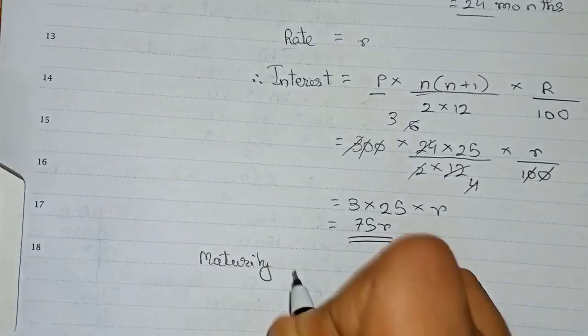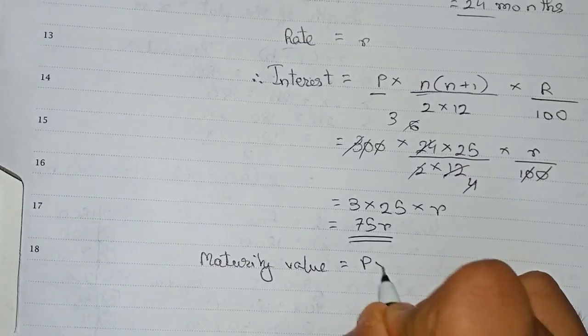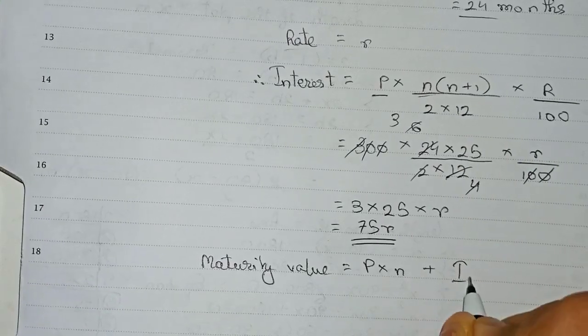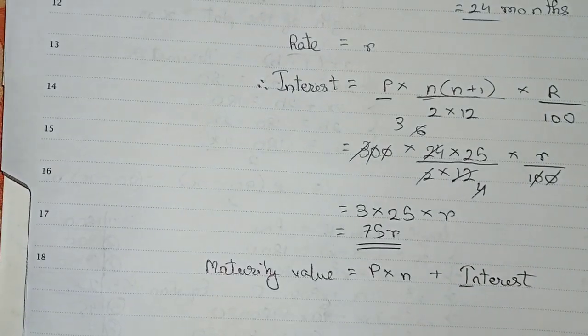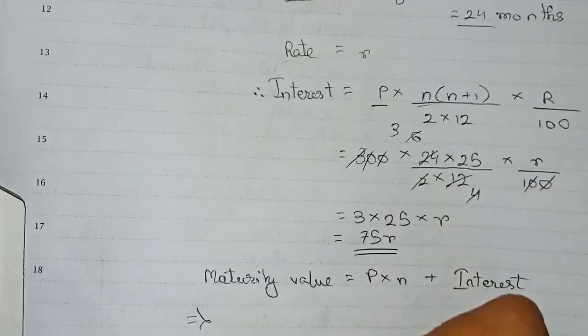So again there is another formula that is: maturity value is equal to principal into n plus the interest. So we put down the values here.